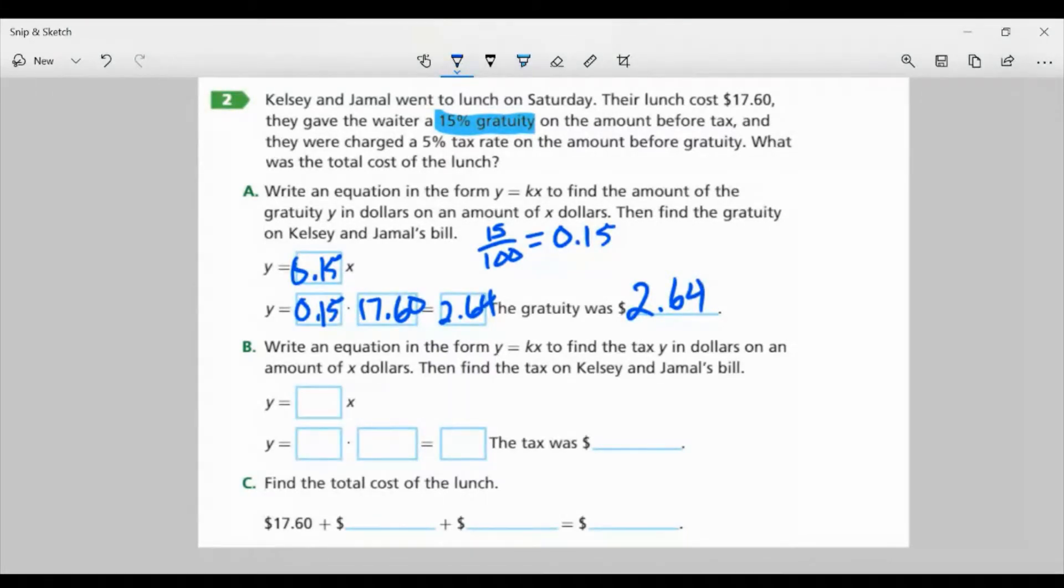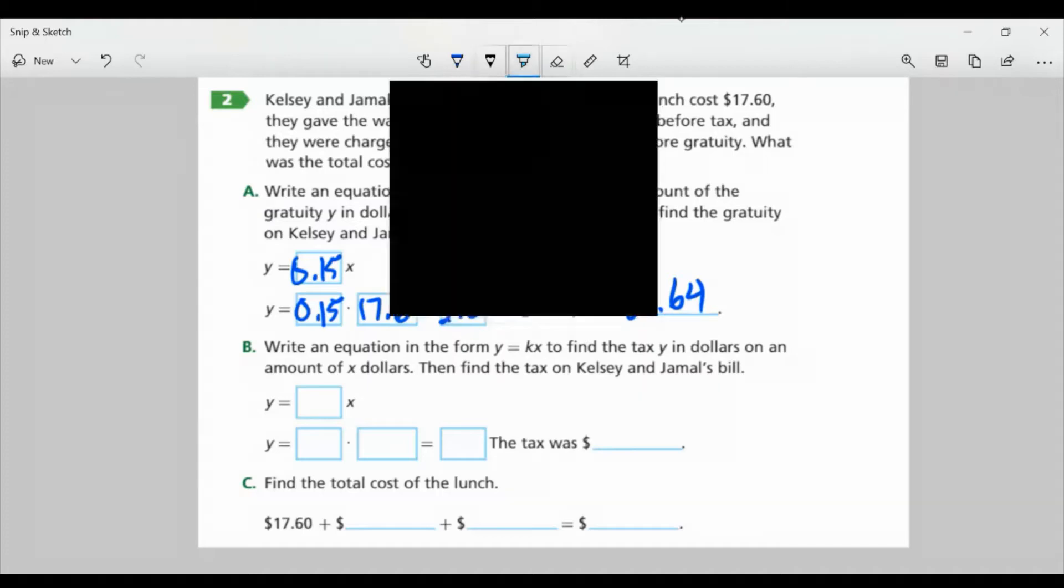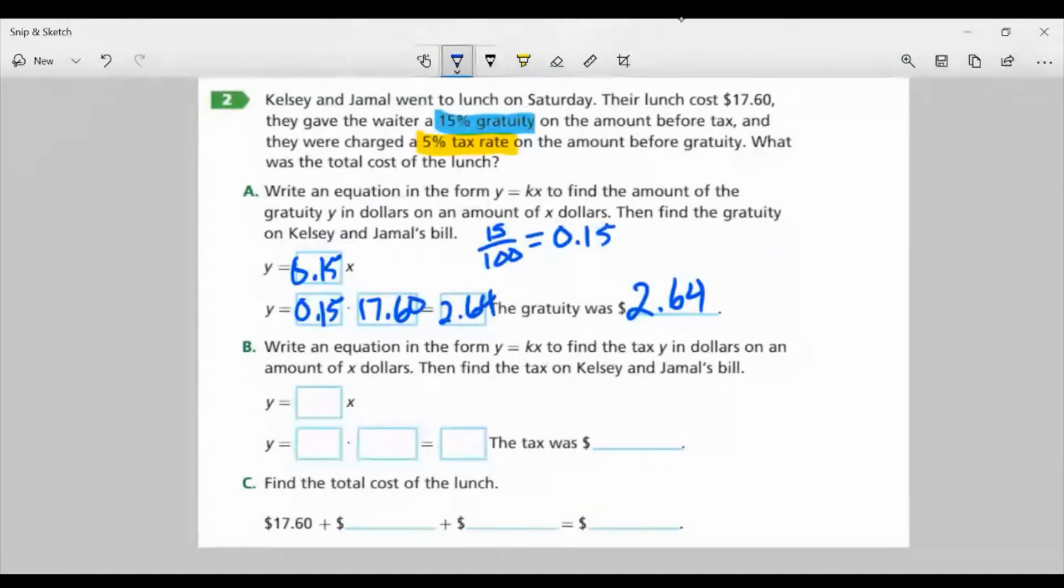Part B: Write an equation in the form Y equals KX to find the tax Y in dollars on an amount of X dollars. Then find the tax on Kelsey and Jamal's bill. Now, this time, we're looking at the tax rate, which was 5%. So I want 5% of $17.60. Again, I want to go from 5% to a decimal. And I'm going to divide it by 100, which is 0.05. And again, think of it as money. That's the same as how you would write 5 cents in a dollar amount. Now, we're going to take this and, again, I'm going to substitute the $17.60 for X so we can multiply these. And I'm going to get 0.88. So that means the tax was 88 cents.